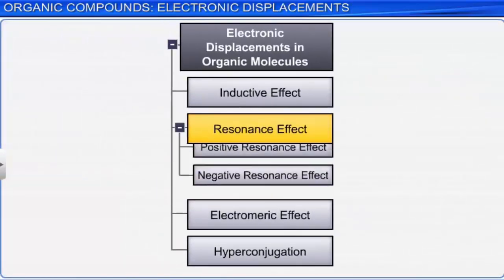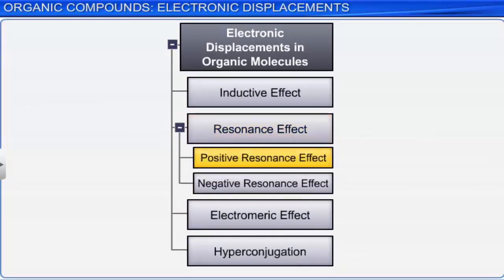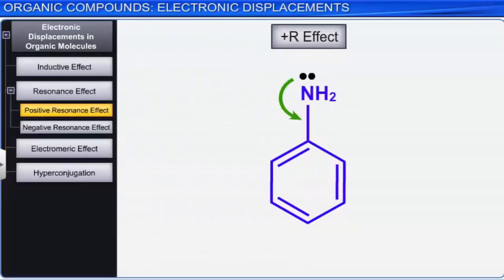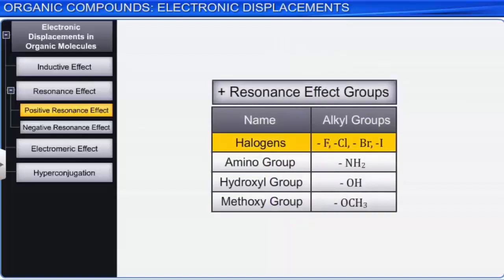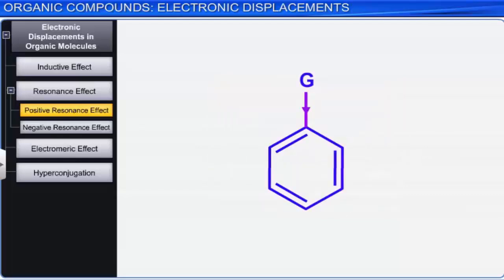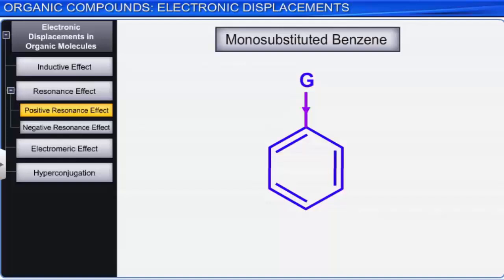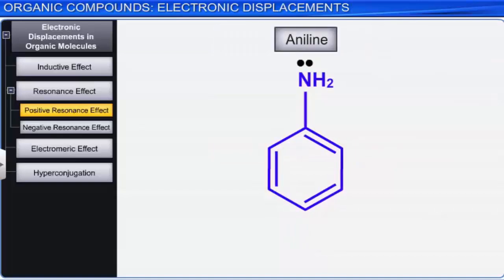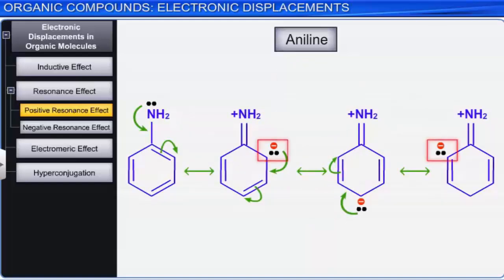Resonance effect is of two types: positive resonance effect and negative resonance effect. In the positive resonance effect, the transfer of electrons is away from an atom or substituent group attached to the conjugated system. Halogens, amino group, hydroxyl group, and methoxy group are examples of positive resonance effect groups. The positive resonance effect in mono-substituted benzene increases the electron density at ortho- and para-positions. For example, in aniline, due to conjugation of the lone pair on nitrogen with the pi electrons of benzene, the electron density is increased at the ortho- and para-positions.